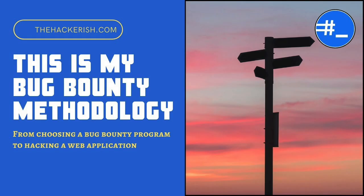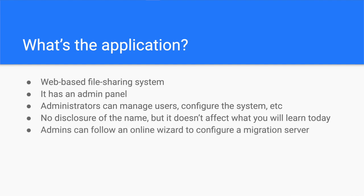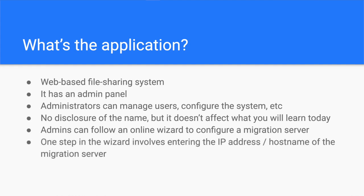Phase 1: Enumeration. The first phase of any security testing is enumeration. In my bug bounty methodology episode, I explained the key questions you need to answer during this phase. In the context of this application, I focused on the administration panel since it contained many interesting features. One of them is the possibility to configure a migration server. This feature has a multi-stage wizard. Whenever I see a complex feature, I tend to put it at the top of my list since developers will likely make more mistakes — and this particular case was no different. During one of the many configuration steps, the application asks for the IP address or hostname of the migration server. For me, I started hearing inner voices screaming SSRF, SSRF.